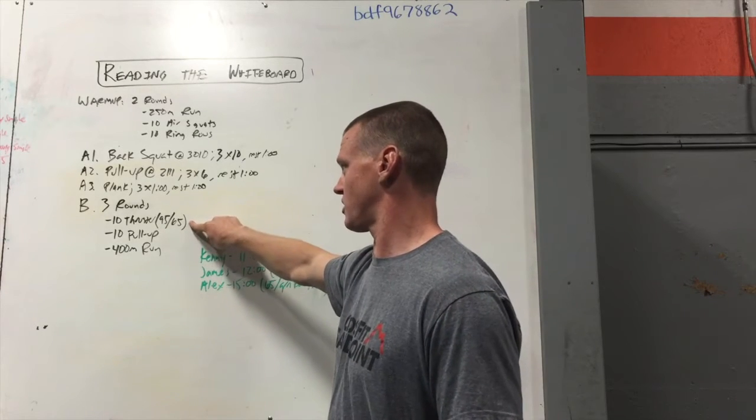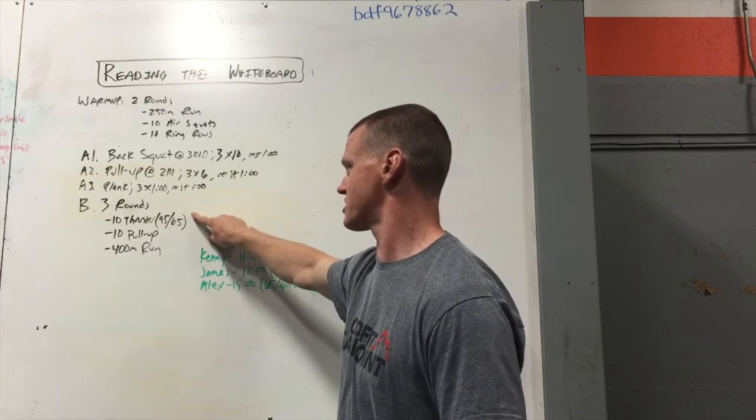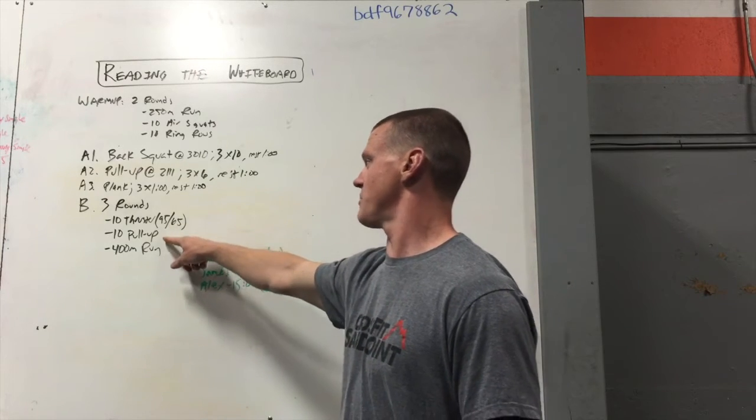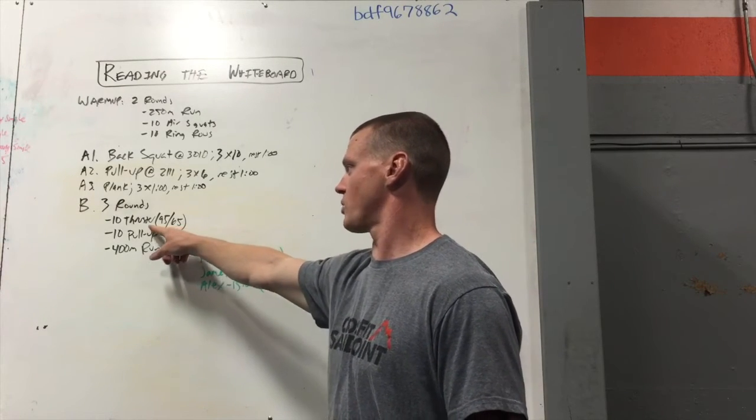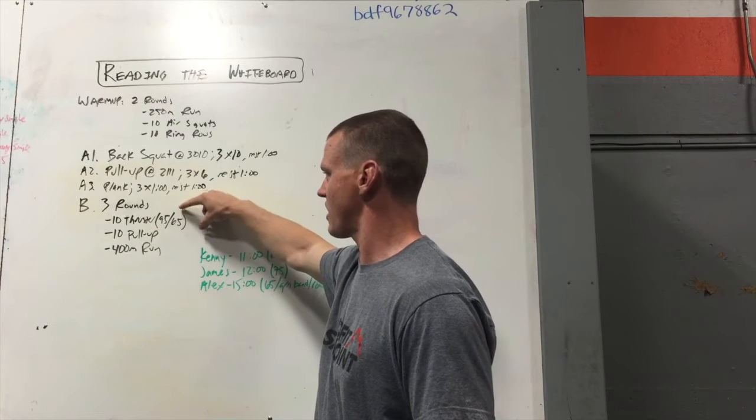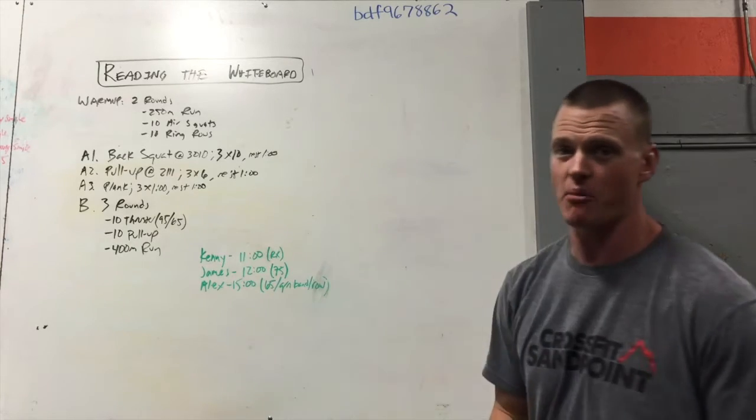Within, next to this movement, the thruster, there's numbers in parentheses, and that corresponds to the prescribed weight for males and for females for this movement. So a thruster's a barbell movement, and for males they're going to use 95 pounds, and for females they're going to use 65 pounds.